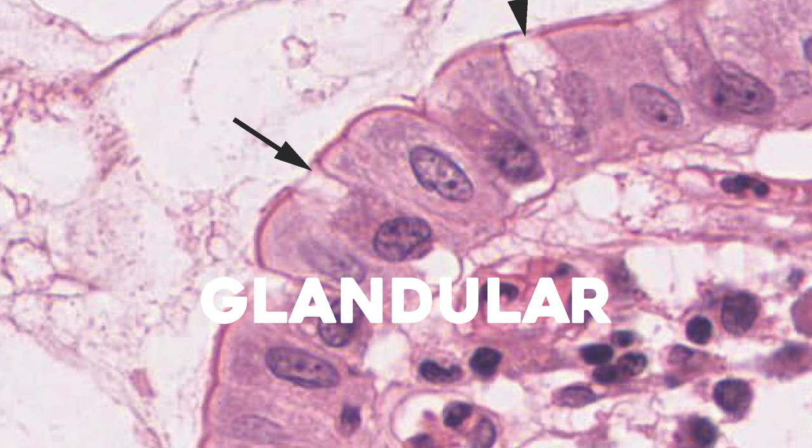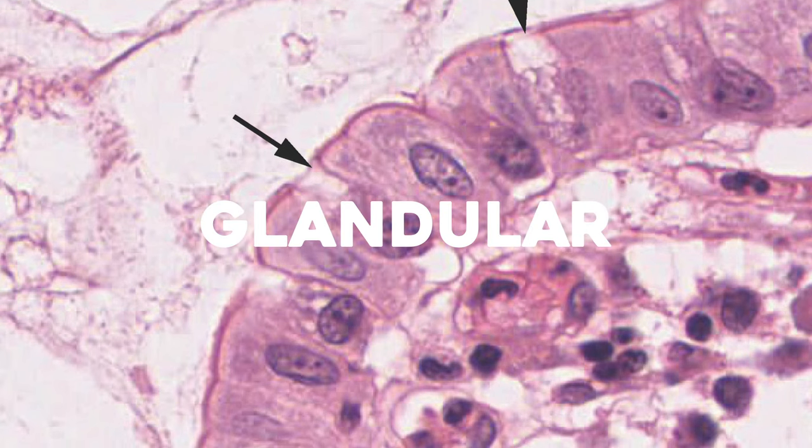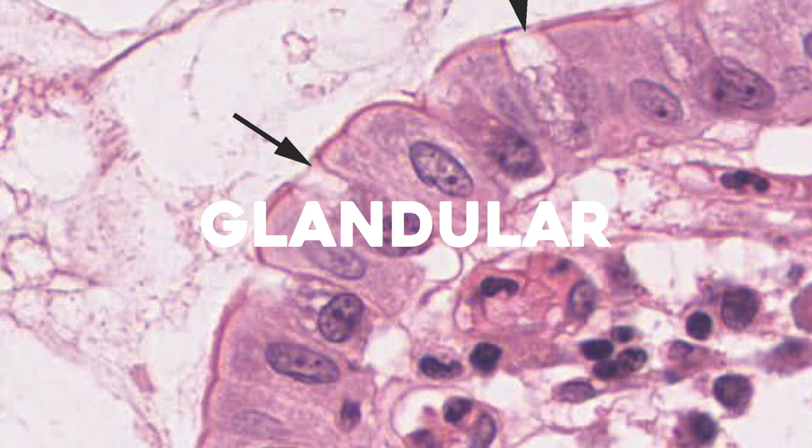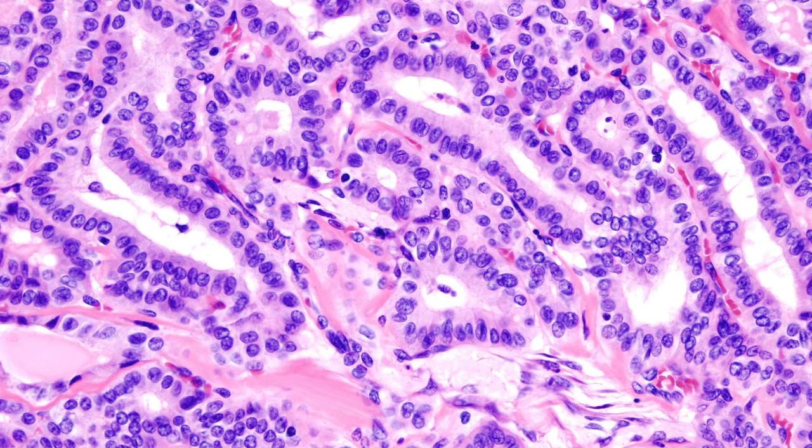But epithelium has a different job we still need to talk about. Remember how those epithelial cells make up the lining of blood vessels and hollow tubes? That means they're constantly bumping into dissolved particles in the blood, so they're great targets to either pump things into the bloodstream or receive messages from it. We call these kinds of cells glandular epithelium, and when we get a bunch of them together, they can form full organs like the thyroid gland.